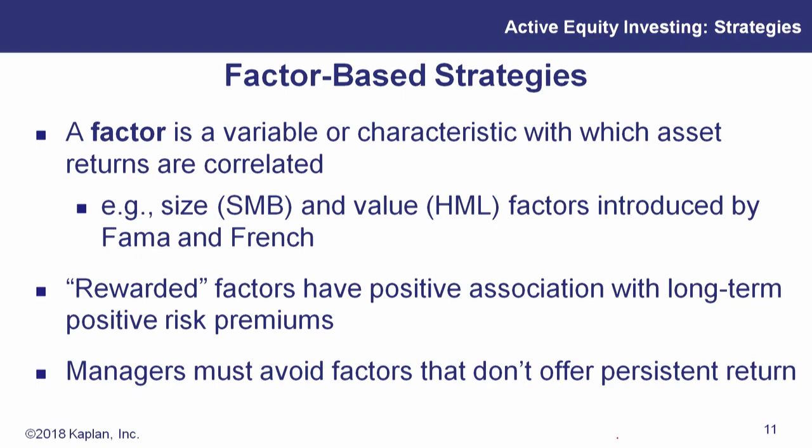Remember our friends Fama and French? They had a three-factor model. And then Carhart came around with a four-factor model. Academic research right now is still looking for that fifth factor. We think there's one more. If you can figure it out, you probably can win the next Nobel Prize. Do that after you pass the CFA, though. That's CFA level four.